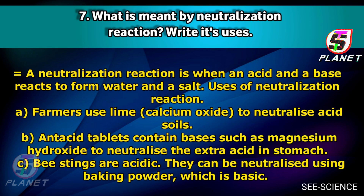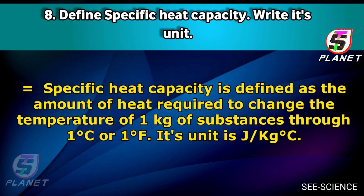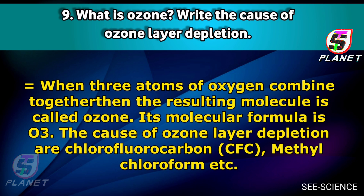Question number eight: Define specific heat capacity and write its unit. Answer: Specific heat capacity is defined as the amount of heat required to change the temperature of 1 kg of a substance through 1 degree Celsius. Its unit is Joule per kg degree Celsius.